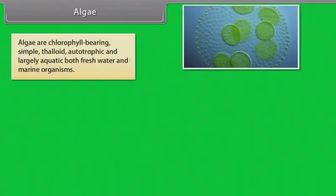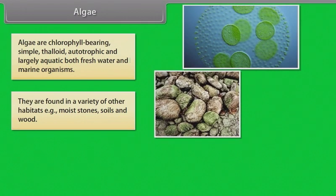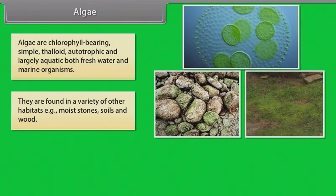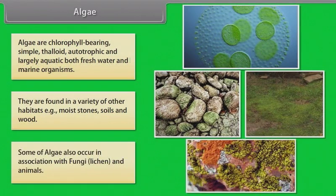Algae are chlorophyll-bearing, simple, thalloid, autotrophic, and largely aquatic both freshwater and marine organisms. They are found in a variety of other habitats as well, example: moist stones, soils, and wood. Some of algae also occur in association with fungi, lichen, and animals.